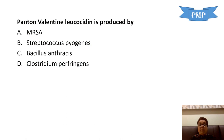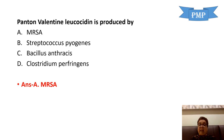Panton-Valentine leukocidin is produced by which of the following? PVL or Panton-Valentine leukocidin is produced by methicillin-resistant Staph aureus. More specifically, there are two types of MRSA — hospital-associated and community-acquired. PVL has a special association with community-acquired MRSA — almost 100% of community-acquired MRSA strains produce this PVL toxin.